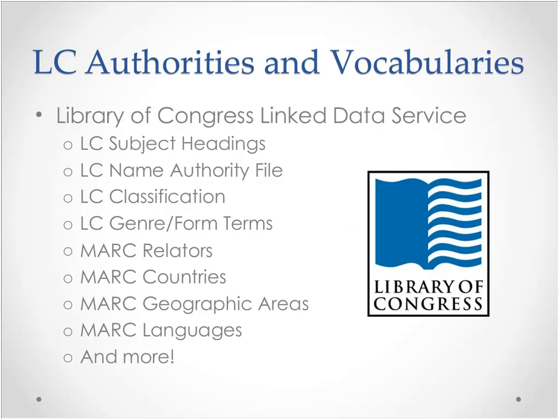First, we have the Library of Congress authorities and vocabularies. The LC linked data service provides access to commonly found standards and vocabularies produced by the Library of Congress, including LC subject headings, the LC name authority file, LC classification schemes, and many smaller vocabularies. The Library of Congress's linked data service enables both humans and machines to programmatically access authority data at LC, and by providing access to their standardized URIs, it enables libraries to connect their data to Library of Congress data values.